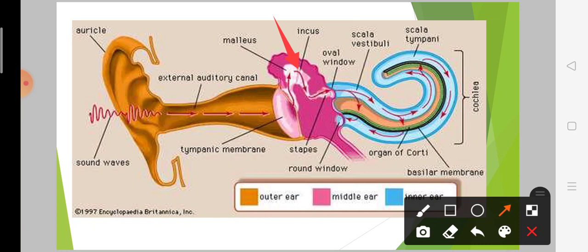The sound waves travel to the stapes. Here you can see the stapes. The stapes is part of the middle ear. After passing through the middle ear, the sound waves reach the oval window. Here you can see the oval window.